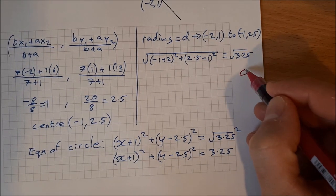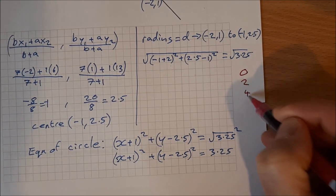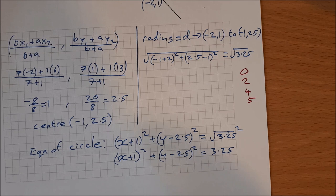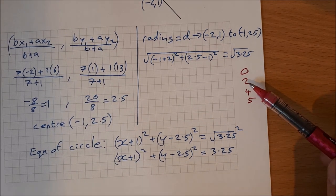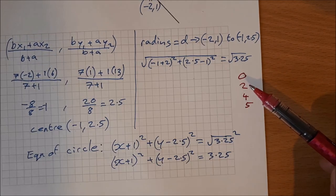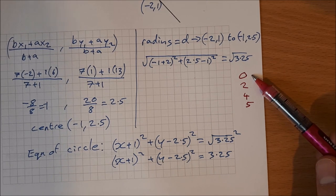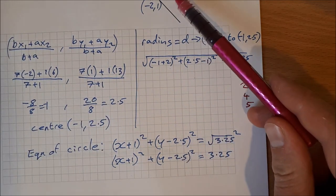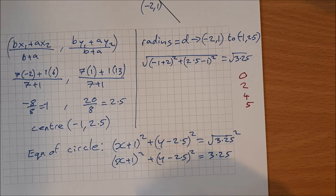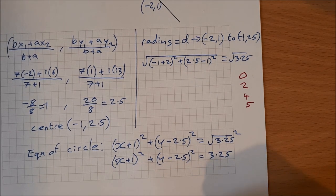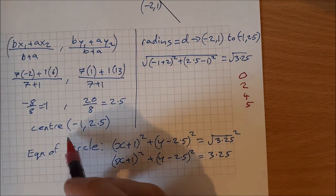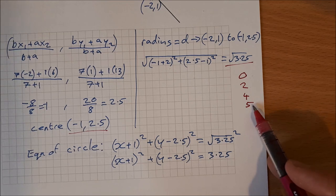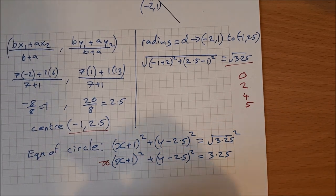For marks on this part: 0, 2, 4, or 5. Two marks for relevant use of the ratio 1:3 or 1:7. Four marks for finding both the center and radius. Five marks for the correct equation of the circle.